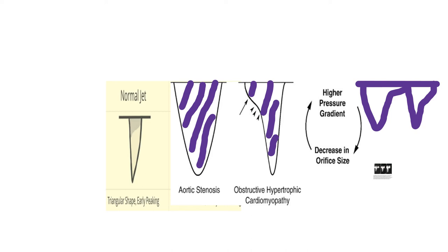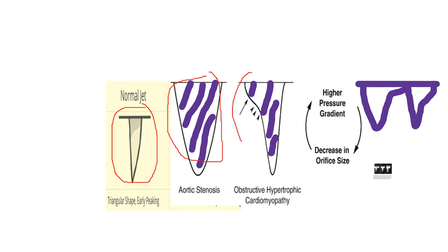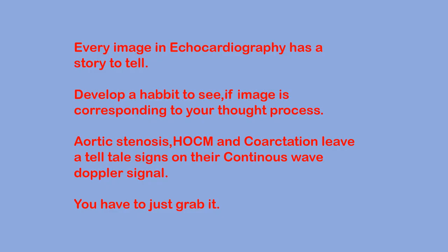Images in echocardiography sometimes leave a lasting impression, and if we sensitize our mind to these images we can easily diagnose the pathology behind the signals. This is the normal aortic valve signal, this is severe aortic stenosis, this is dynamic LVOT obstruction, and this is coarctation with diastolic runoff. To sum up, every image in echocardiography has a story to tell — develop the habit of correlating images to your thought process.